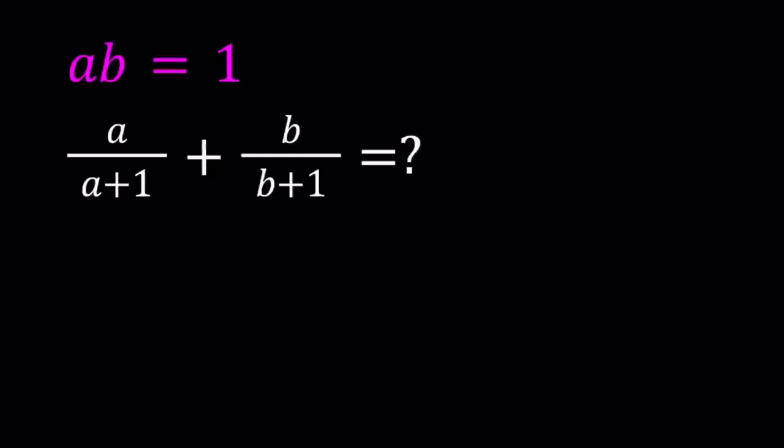Hello everyone. In this video, we're going to be simplifying a rational expression. We are given that a times b is equal to 1, and we're supposed to simplify or evaluate a over a plus 1 plus b over b plus 1. I'll say not evaluate necessarily because we do not know if this has a constant value. Maybe we're going to find something in terms of a or b or both.